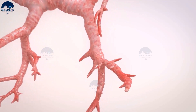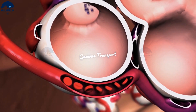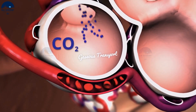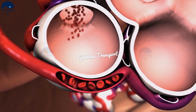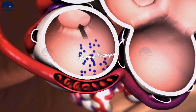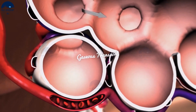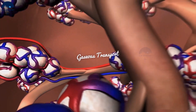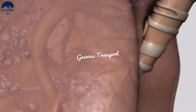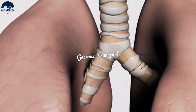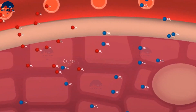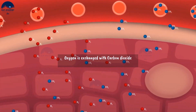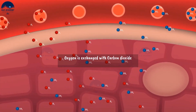The second step is gas exchange, which occurs in the air sacs where oxygen is exchanged with carbon dioxide. Through the very thin walls of the alveoli, oxygen from the air passes into your blood in the surrounding capillaries. At the same time, carbon dioxide moves from the capillaries into the air sacs. This process of exchanging oxygen for carbon dioxide is called gas exchange.